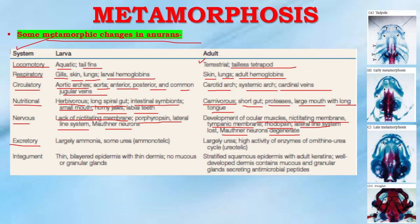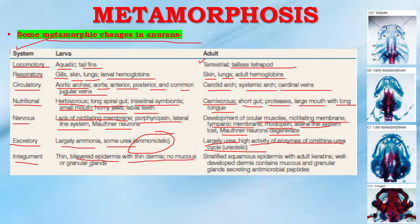In the excretory system, larvae excrete largely ammonia — that is, they are ammonotelic — but in the adult it is largely urea, with high activity of enzymes of the ornithine-urea cycle, making them ureotelic. In the integument, in larvae it is thin bilayered epidermis with thin dermis and no mucus or granular glands, but in the adult there is stratified squamous epidermis with adult keratin, well-developed dermis containing mucus and granular glands secreting antimicrobial peptides.